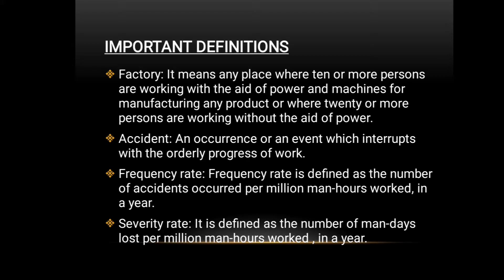How do you understand the name of a factory? A factory involves power and machinery used by members of a group engaged in product manufacturing. Next is accident — what is an unexpected event? An accident is an occurrence which interrupts the orderly progress of work.